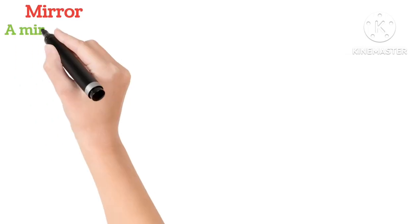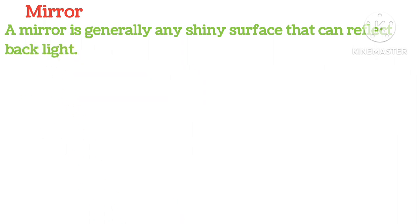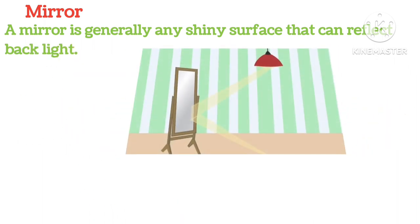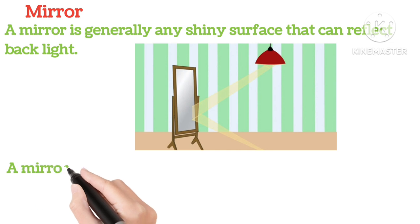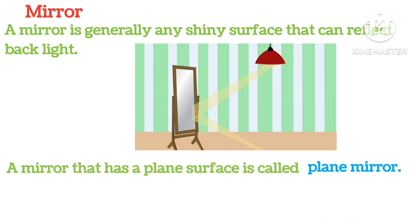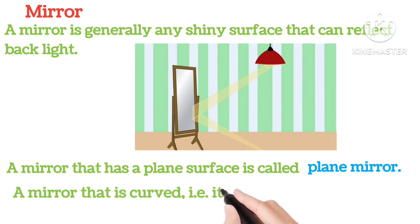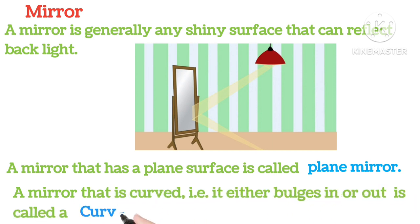Mirror. A mirror is generally any shiny surface that can reflect back light. A mirror that has a plain surface is called a plain mirror. The mirror that is curved, that is either bulges in or out, is called a curved mirror.